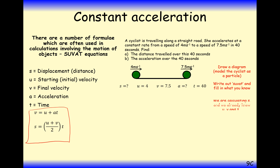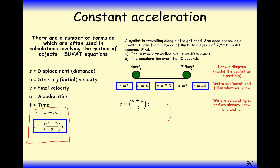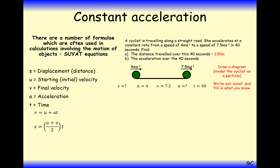Applying SUVAT for the first part — which formula are we going to use? It's the formula that links S, U, V, and T together, which is the second one. Substituting our numbers into this formula and we get 230 metres. It's not always the case that you'll be finding the letter that starts the formula — you could be finding V knowing S, U, and T, and just need to rearrange after substituting. So the first answer here is 230.